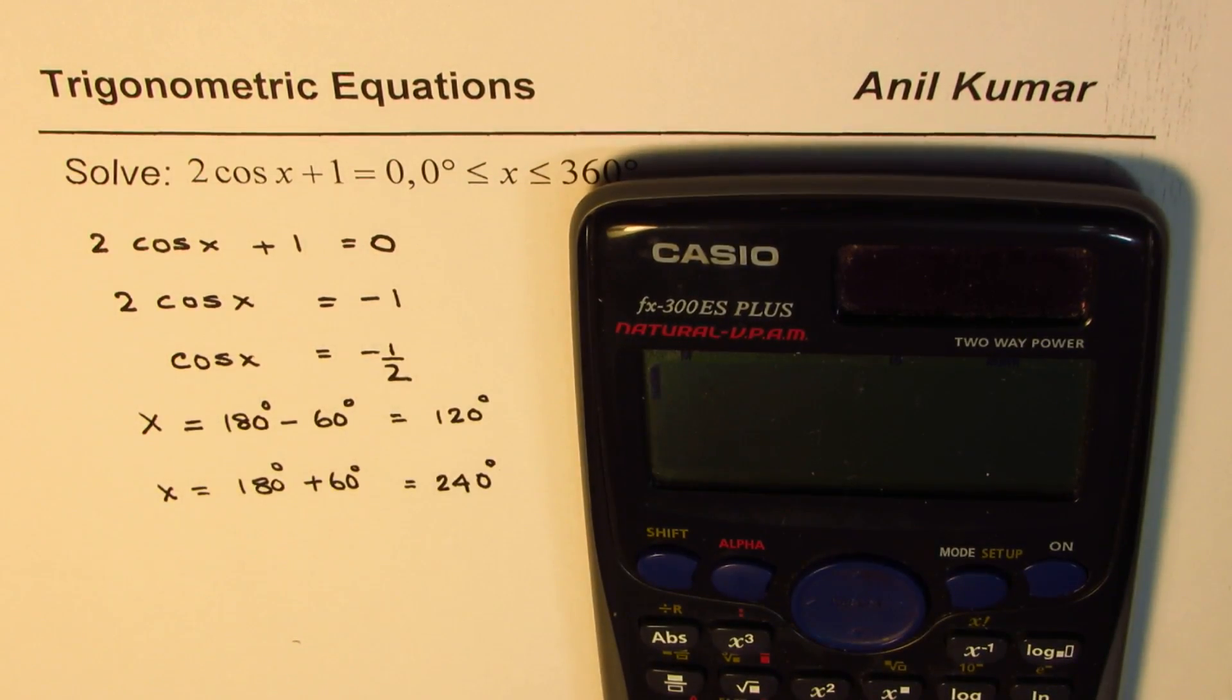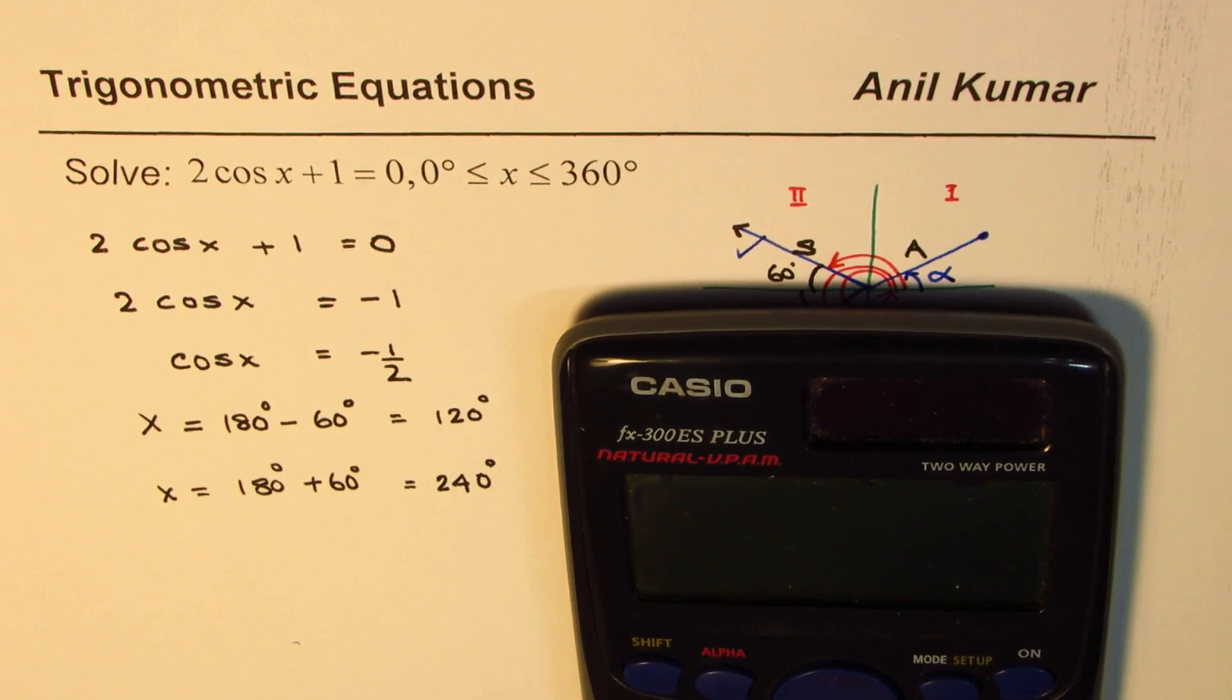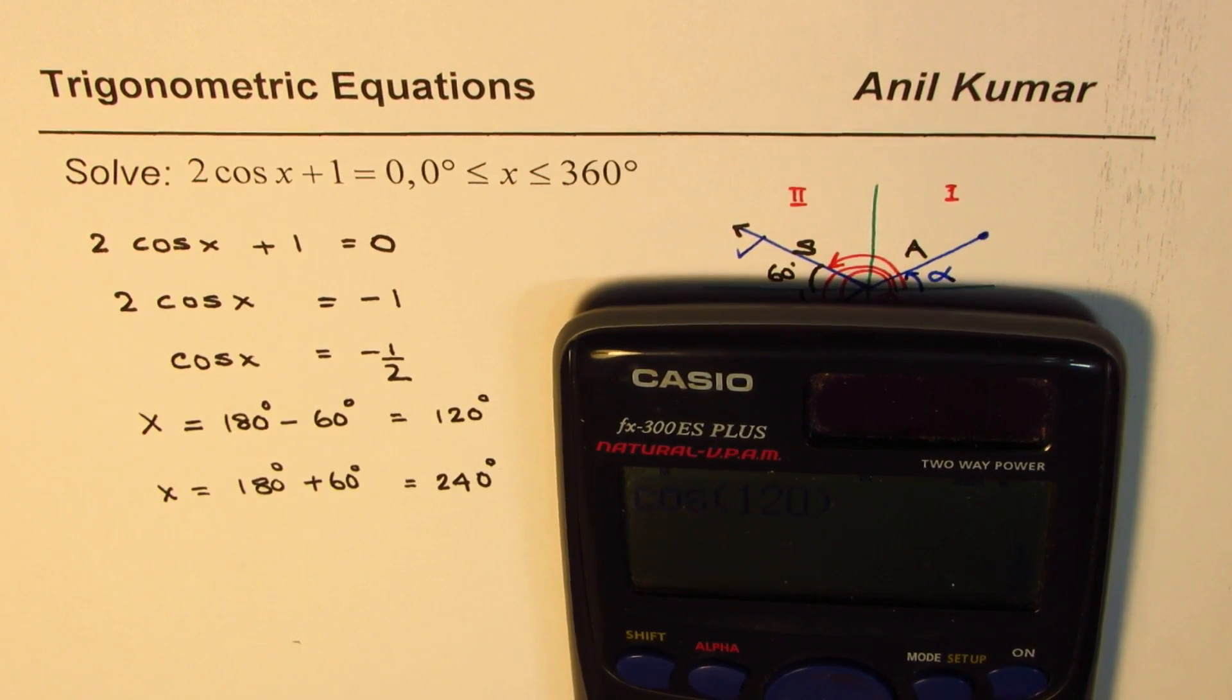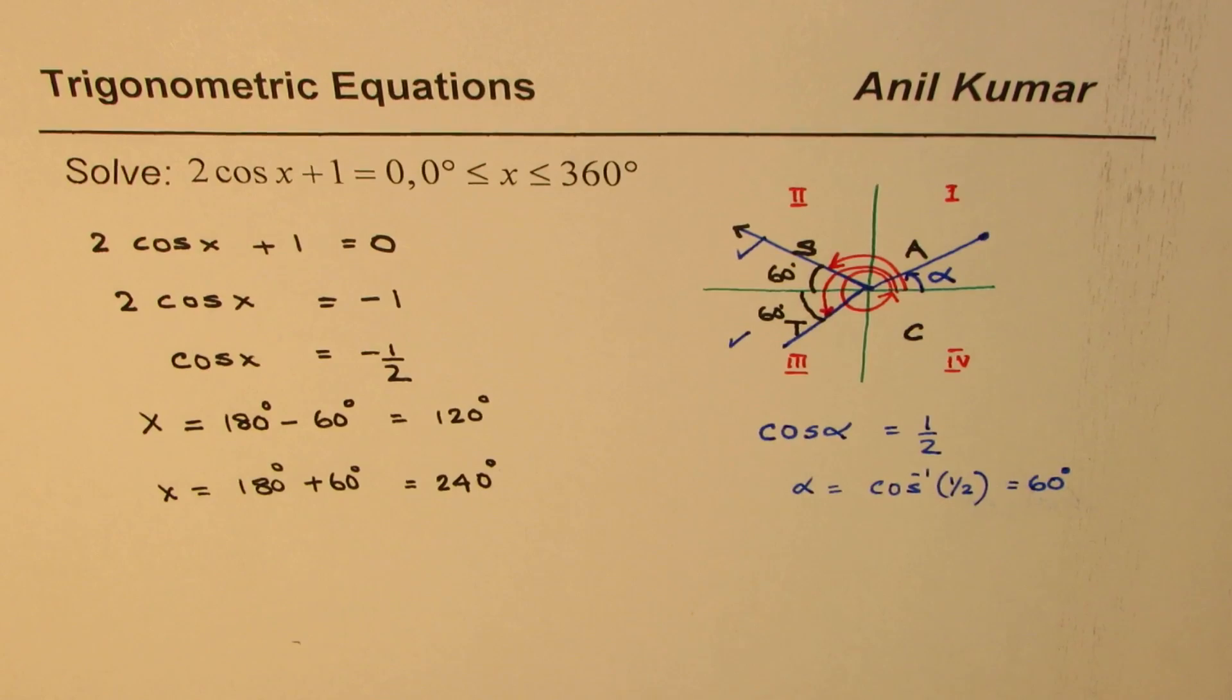So that is how we get two solutions from the given equation. If this is the first video, we are taking more time to understand. Let's check it. So let's write down cos of 120. That is equals to minus half. Correct? Similarly, cos of 240 is equal to minus half. So both are correct solutions. So that is how we get two solutions from the given equation.